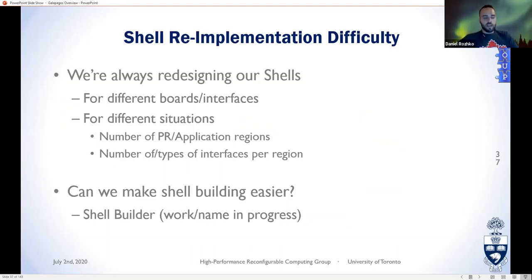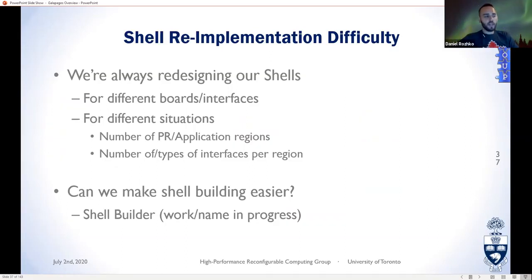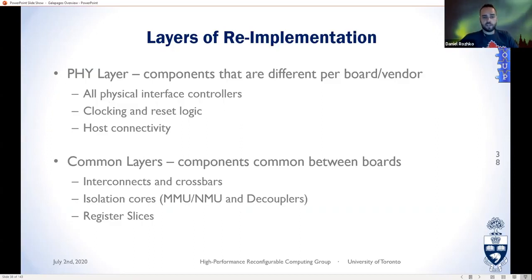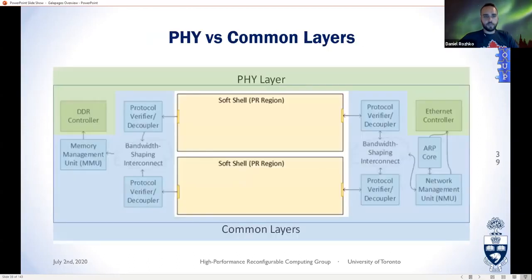We're always redesigning shells when targeting different boards, different interfaces, different numbers of PR regions, or different interfaces per region. The shell builder addresses this. We split the shell into layers: the physical layer — components that change board to board, like physical interfaces, clocking, reset, host connectivity — and common layers — components that don't change between boards, such as interconnects, isolation cores, and register slices. The physical layers are the controllers; the common layers are everything else.